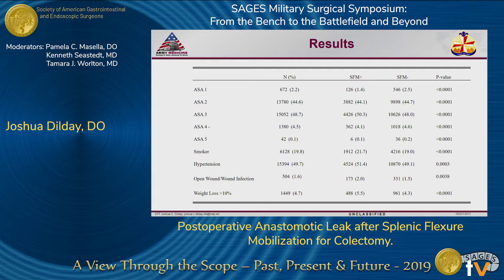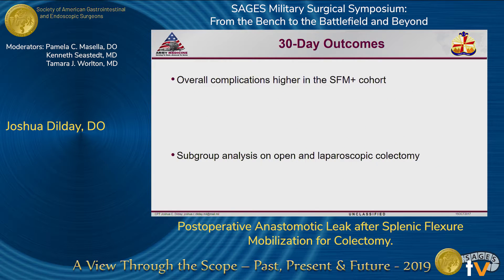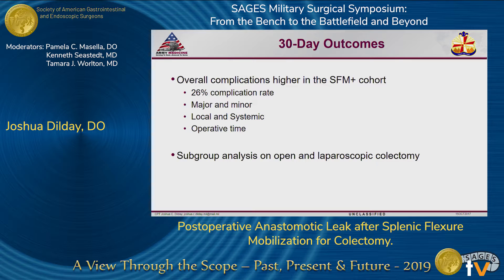There are some differences between the groups. The splenic flexor mobilization cohort had higher rates of smoking, hypertension, and weight loss greater than 10%. Regarding 30-day outcomes, overall outcomes were higher with the presence of splenic flexor mobilization, including a 26% complication rate. Subgroup analysis showed increased rates of both major and minor complications, as well as systemic and local complications as defined by NISQIP. It also increased operative time when splenic flexor mobilization was used.